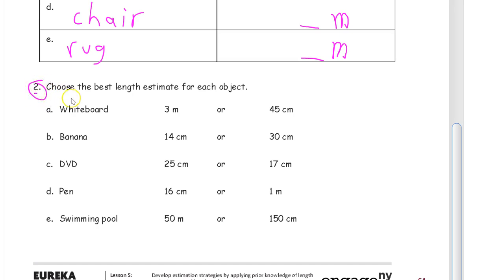So number two. Choose the best length estimate for each object. So look at a whiteboard in the classroom. 45 centimeters is, that's a little bit longer than just a ruler. So that's not very long. A whiteboard is probably going to be bigger than that unless it's a personal size whiteboard. If it's a big one that's up on the wall in your classroom, three meters is probably a better estimate.